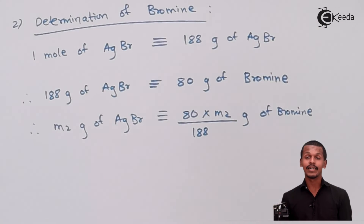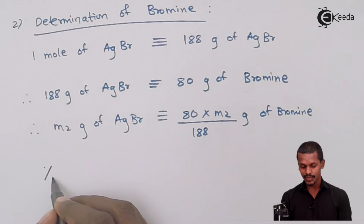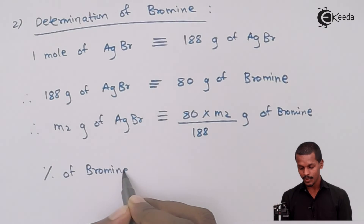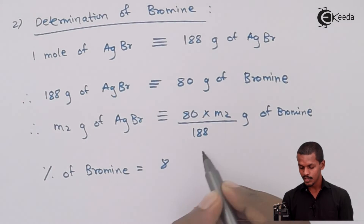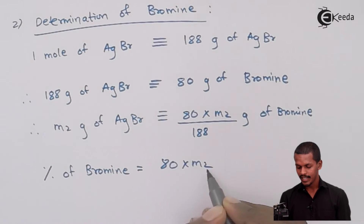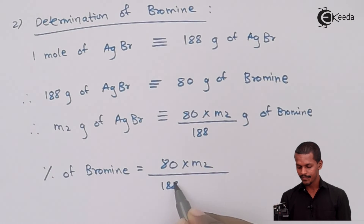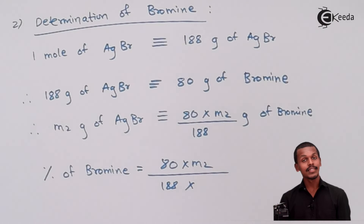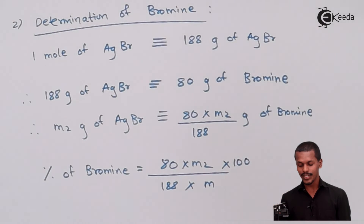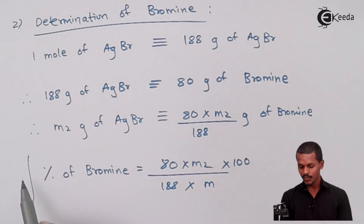The percentage of bromine present in the organic compound is: % Bromine = (80 × M2) / (188 × M) × 100, where M2 is the mass of AgBr obtained and M is the mass of the organic compound.